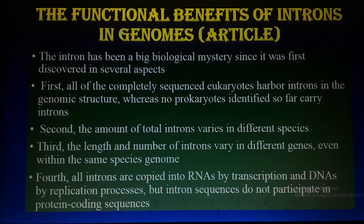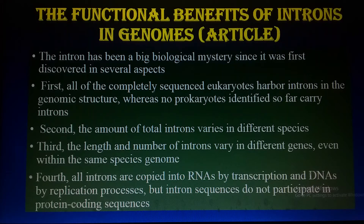This article on 'The Functional Benefits of Introns in the Genome' is important to read. Introns have been a big biological mystery and still remain one. They are present in eukaryotes and viruses but absent in prokaryotes. The amount of total introns varies in different species, and the length and number of introns also vary in different genes of the same species — for example, in humans different genes have different lengths and numbers of introns.